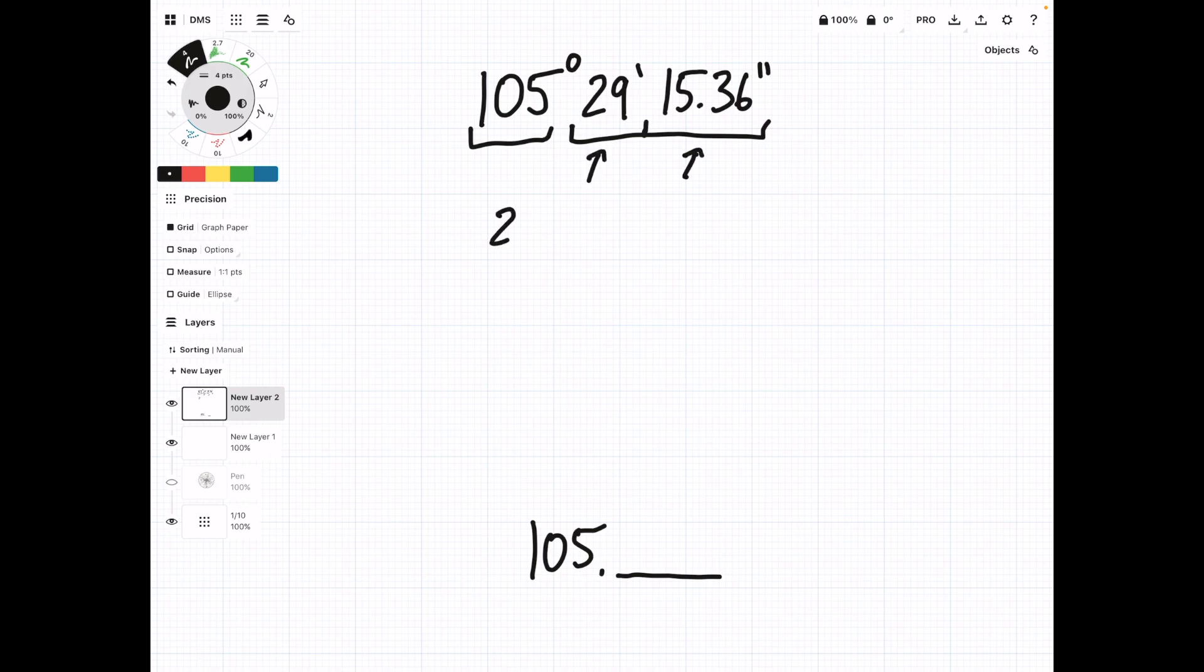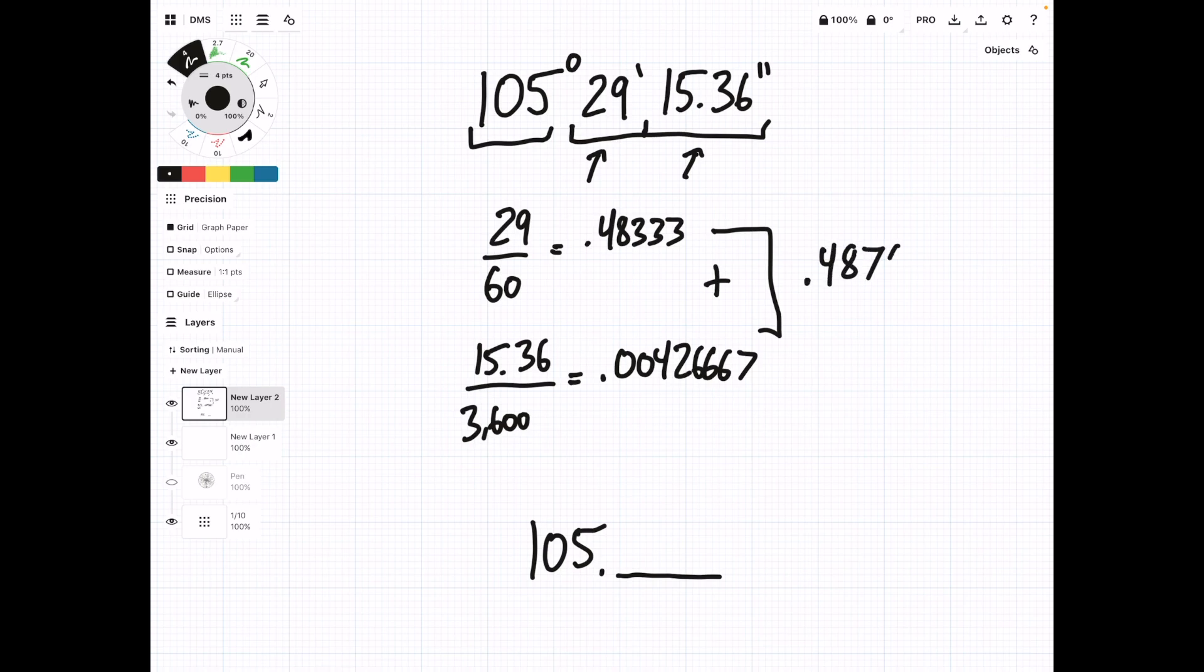We need to take the minutes and divide them by 60, which is going to give us 0.48333. And then we need to take the seconds, 15.36, and divide them by 3,600, since there are 3,600 seconds in a degree. And this is going to give us 0.00426667. Now, we just add up these two parts, which gives us 0.4876. And that's what goes in our decimal place. Degrees.